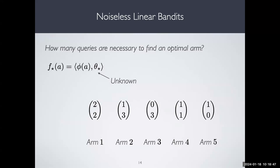There are scenarios where you may have that the mean rewards can be represented as a linear function of some features. In these cases, if I try a particular arm, I actually learn something about the mean reward of another one. For example, if there is no noise, I only need two queries — two linearly independent arms — to learn theta-star and then learn exactly what F-star is. Whereas if I had the same problem with five arms in a multi-arm bandit scenario, I need five queries.